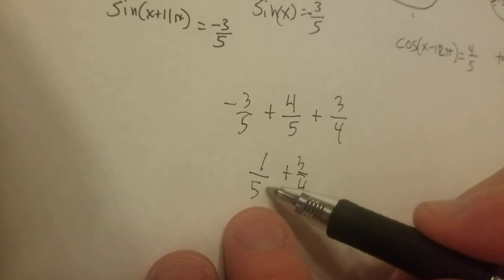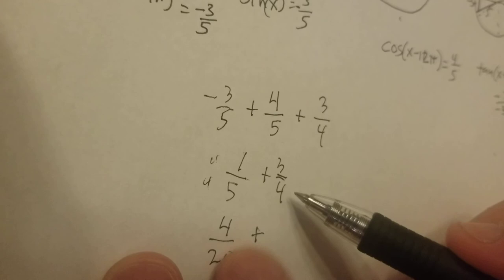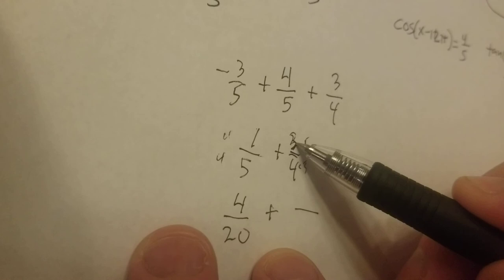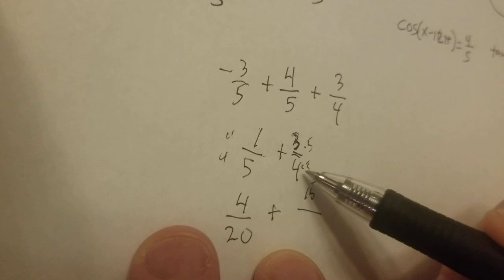Plus 3 over 4. Now I've got a different denominator, so I've got to get them to the same denominator. So I'm going to multiply this one by 4 on the top and the bottom, so that becomes 4 over 20. Plus this one, I need to put a 5 down there, so that becomes 3 times 5 is 15 over 4 times 5 is 20. So I've got 4 plus 15 over 20, so I have 19 over 20 is the answer I get. I hope that's right.